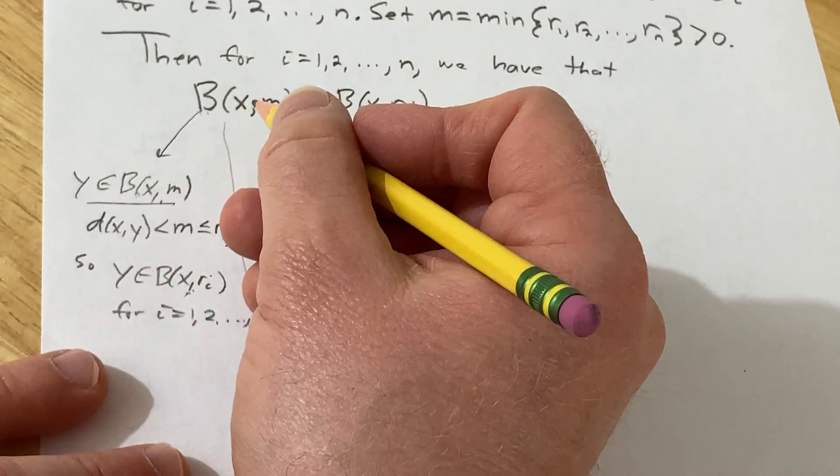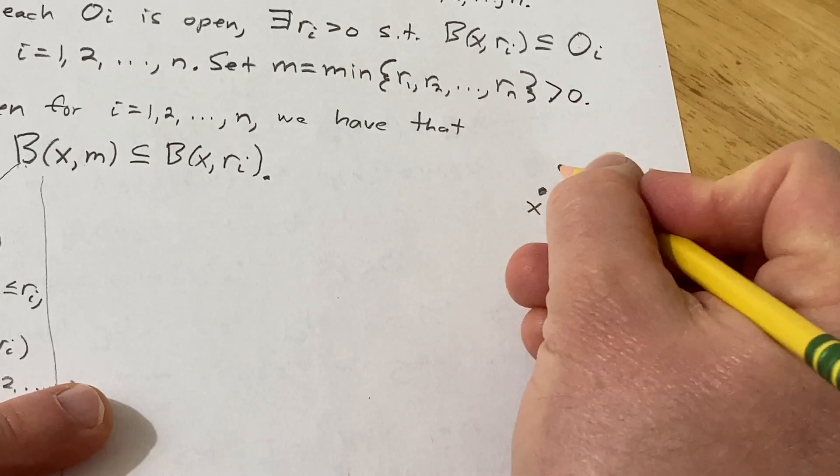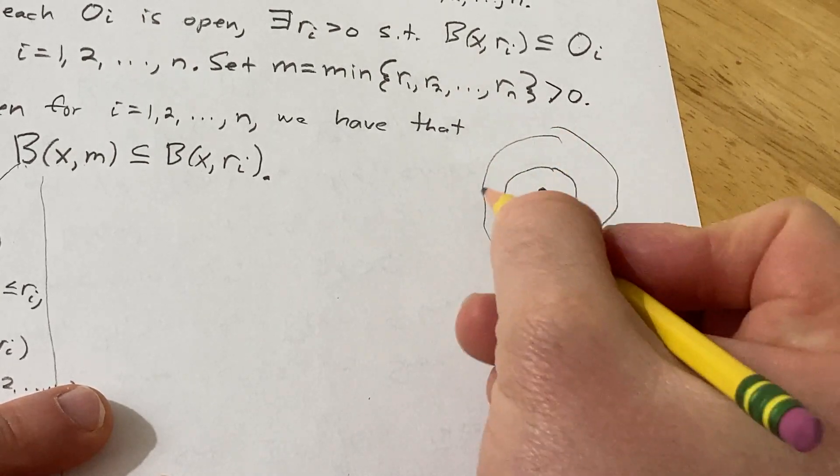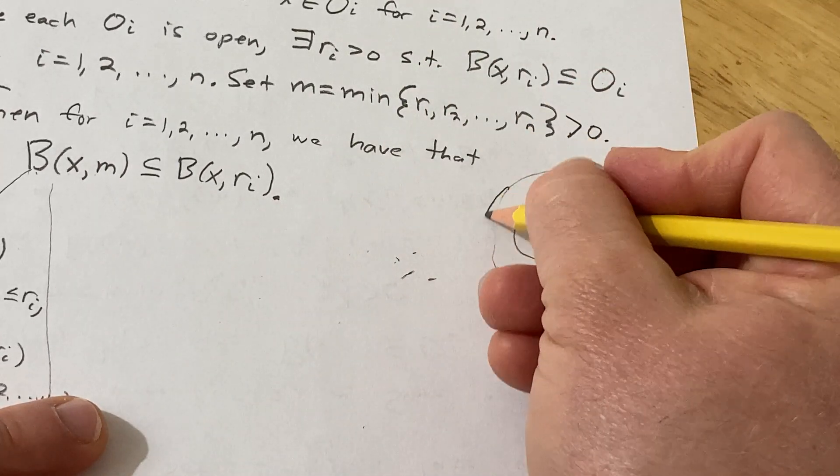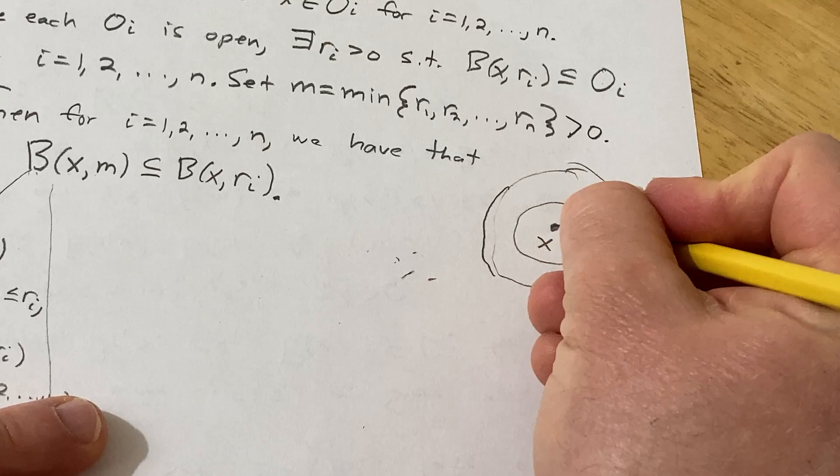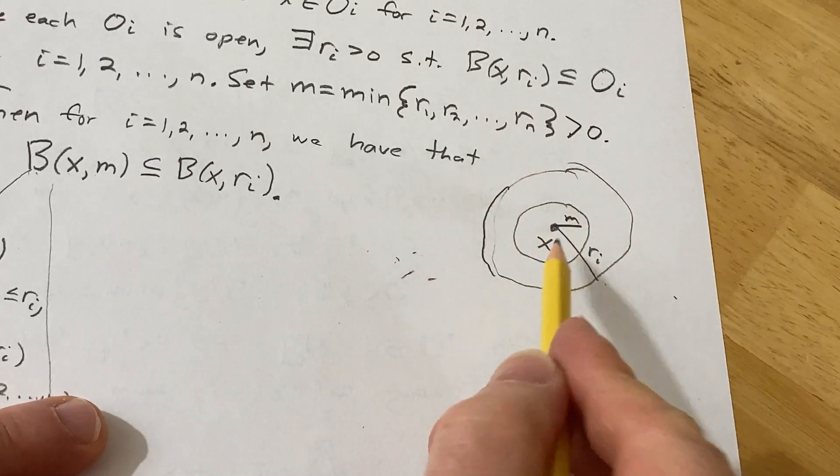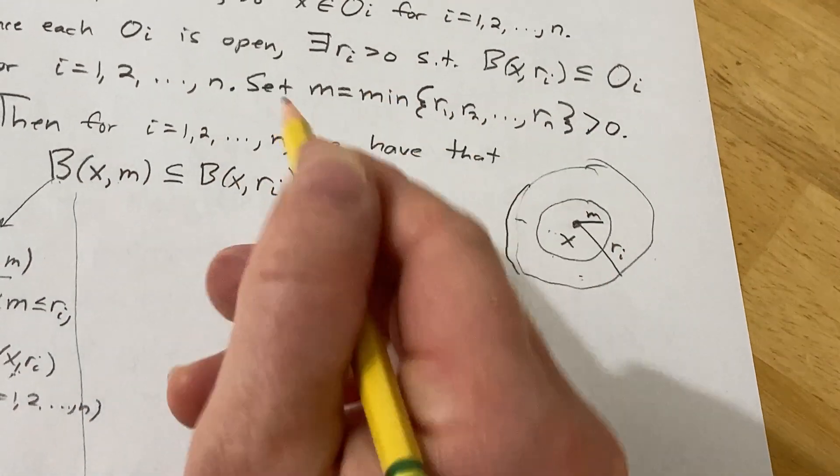And again, it's just because the radius is smaller, right? If you have graphically, if you have a point here x and then you have a circle here and a circle here—and then this is m and this is one of your rᵢ's—you can see clearly that the open ball is smaller, so it's a subset of the bigger one. So that's all we're saying here.